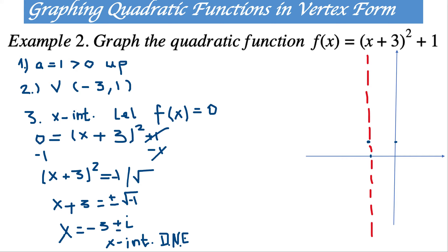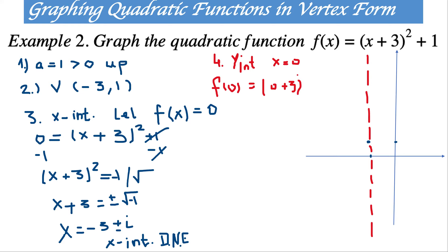Number 4: y-intercept. To find the y-intercept, we suppose x is equal to 0. So f of 0 equals 0 plus 3 squared plus 1. Zero plus 3 is 3, and 3 squared is 9. So f of 0 is equal to 9 plus 1, which is 10.